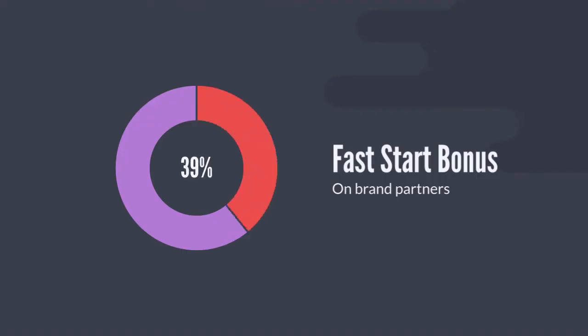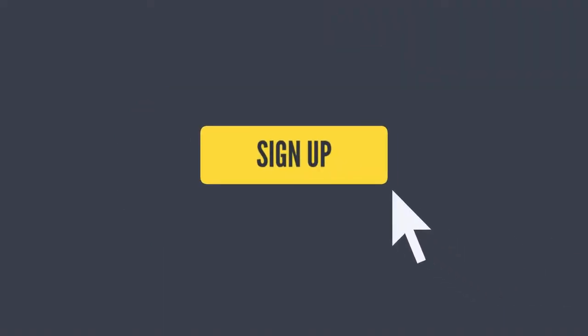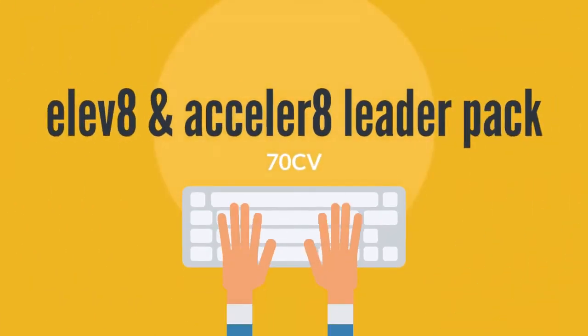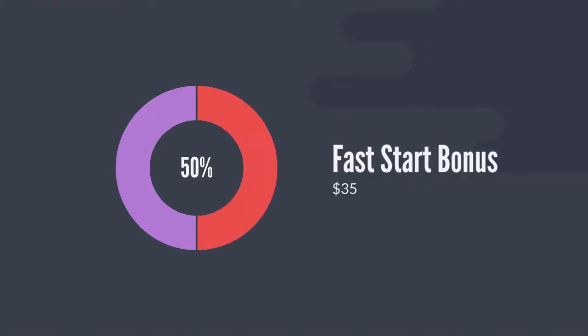Our second bonus is the one-time 50% fast start bonus on brand partners. Whenever you personally enroll a new brand partner, you will receive a one-time 50% fast start bonus from the CV. Let's say Joan enrolls for the $89 Elevate and Accelerate leader pack, which is worth $70 CV. You would receive a one-time 50% fast start bonus from the $70 CV, which is $35.